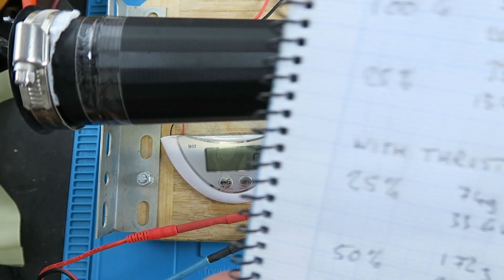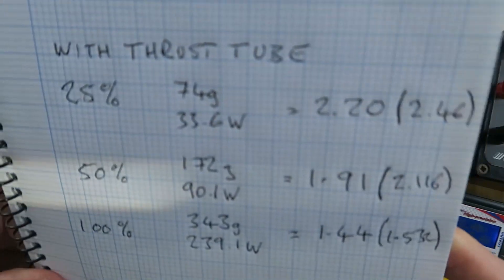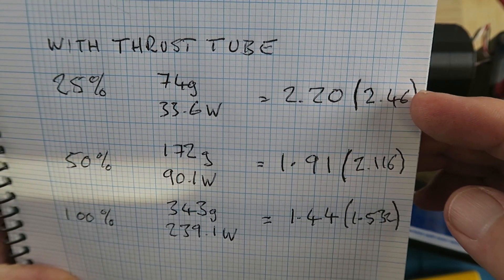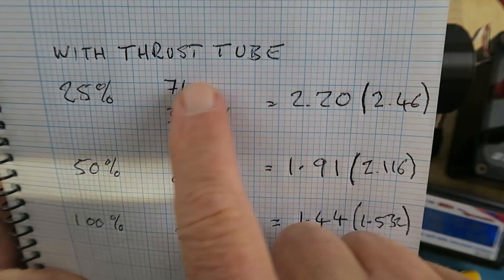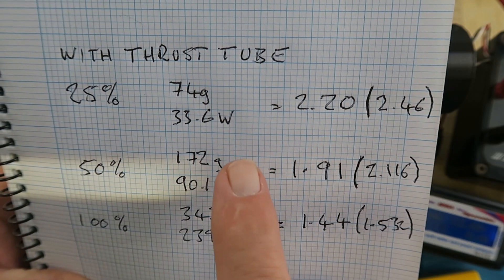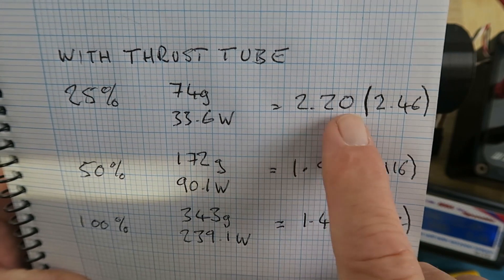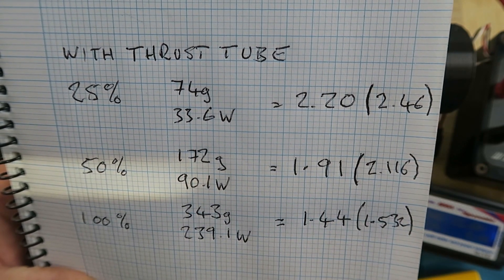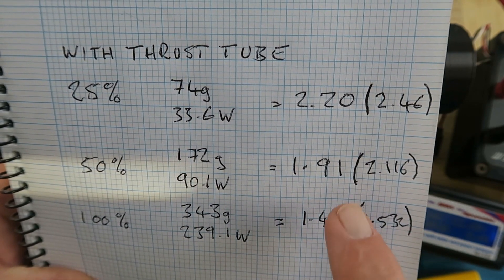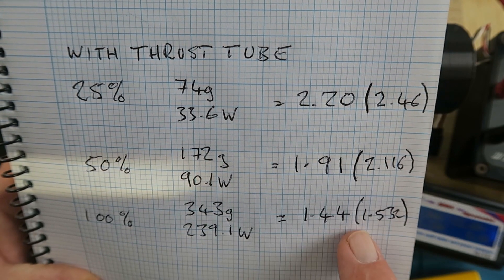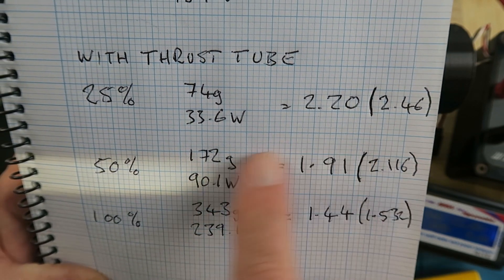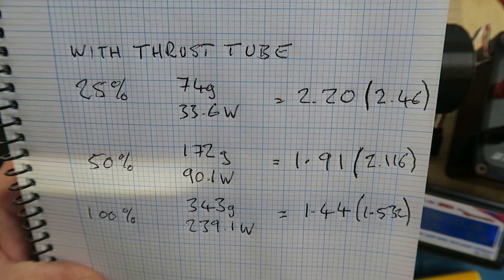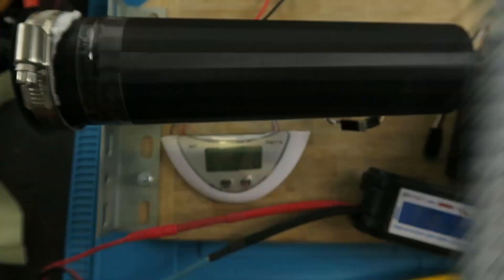The results from the thrust tube test - these were the previous readings at the same sort of throttle settings. At the lower throttle settings we seem to be getting more thrust there, but there's a drop in the efficiency. The numbers at 50% and at 100% are within the same sort of ballpark.